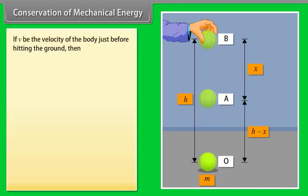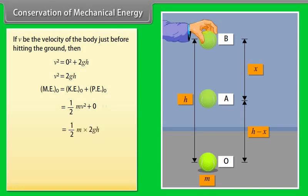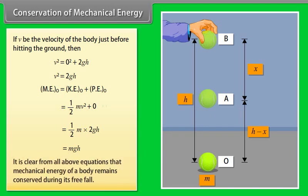If V be the velocity of the body just before hitting the ground, then V square is equal to 2gh. Here mechanical energy of the body at o is equal to kinetic energy of the body at o plus potential energy of the body at o. By calculating it, we get mechanical energy of a body at o is mgh. It is clear from all above equations that mechanical energy of a body remains conserved during its free fall.